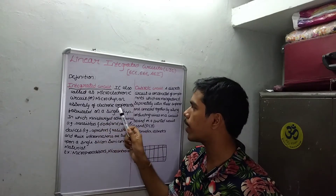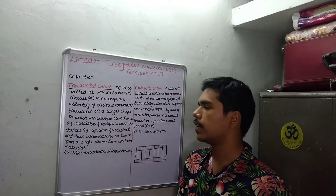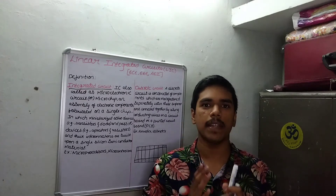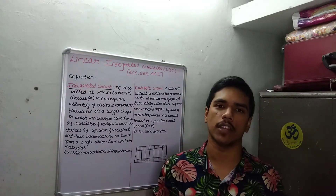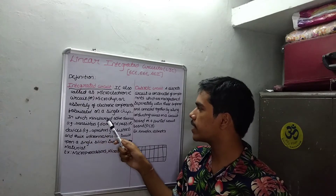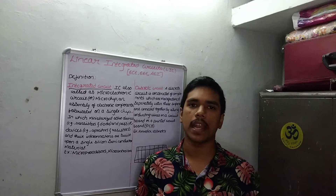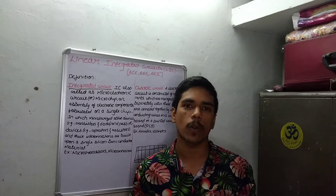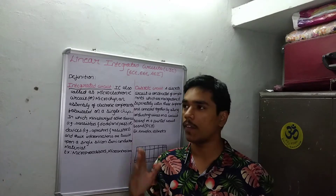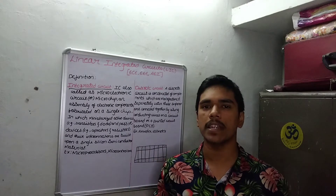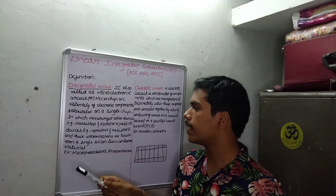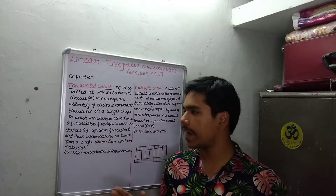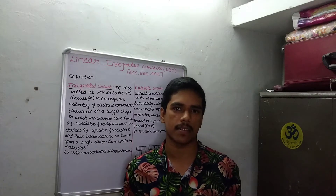Next: assembly of electronic components fabricated on a single chip. An integrated circuit is an assembly — a group of electronic components — in which miniaturized active devices and passive devices are integrated. Active components, as all of you know, are transistors and diodes. Passive components are capacitors and resistors.